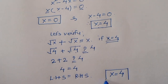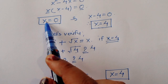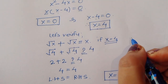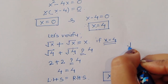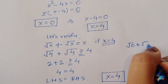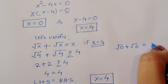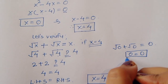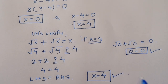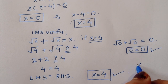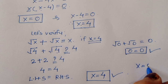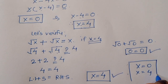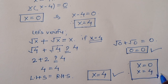Next, for x equals 0: square root of 0 plus square root of 0 is equal to 0, which also holds true. So both solutions are correct. We got two values: x equals 0 and x equals 4. This is the true solution. Thank you.